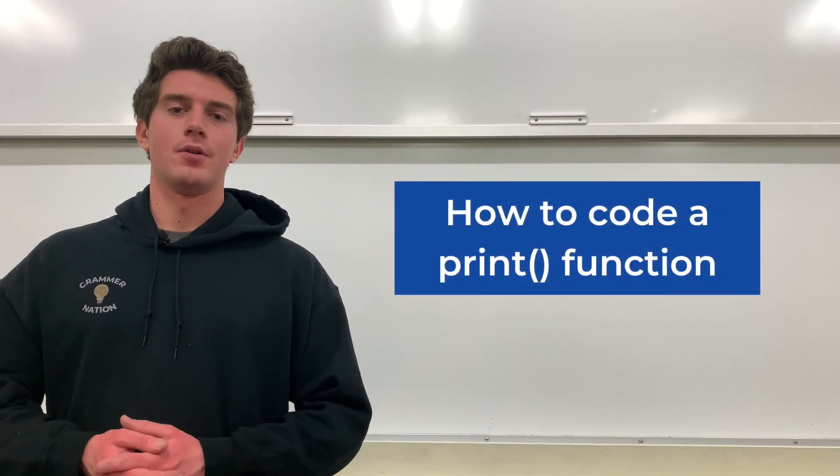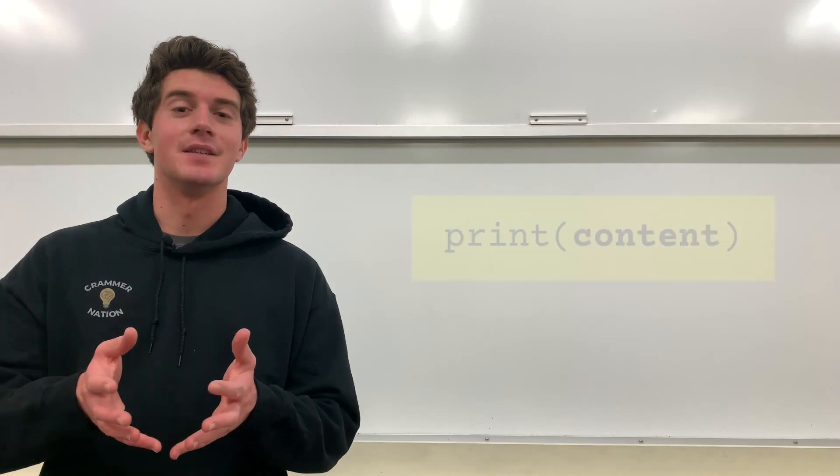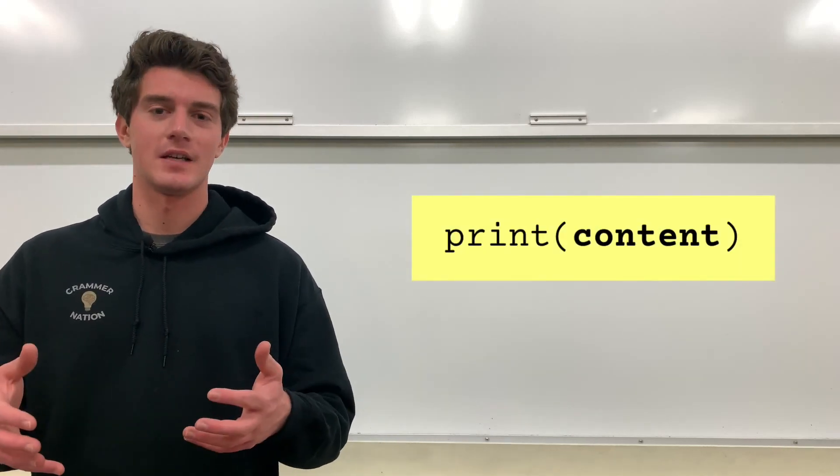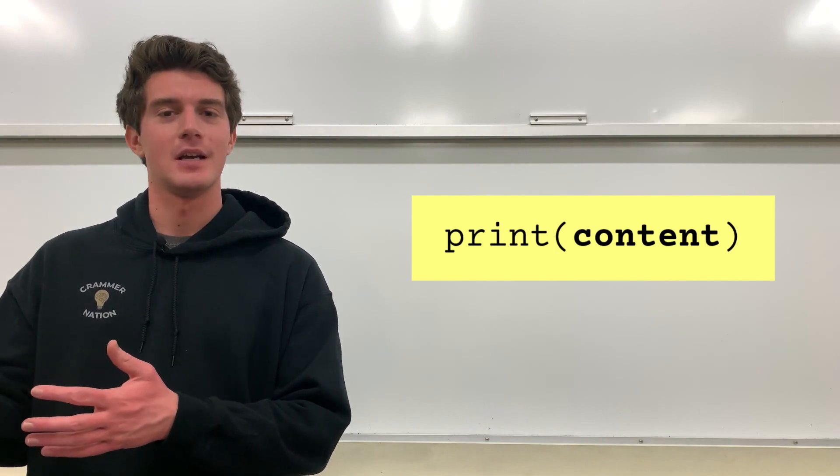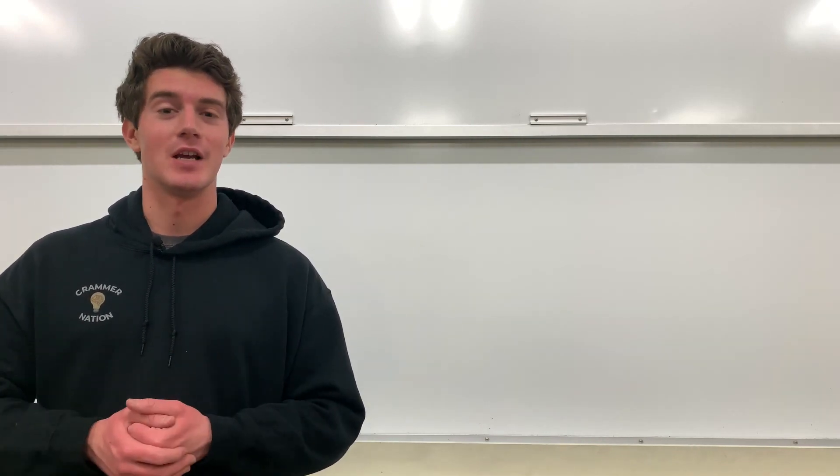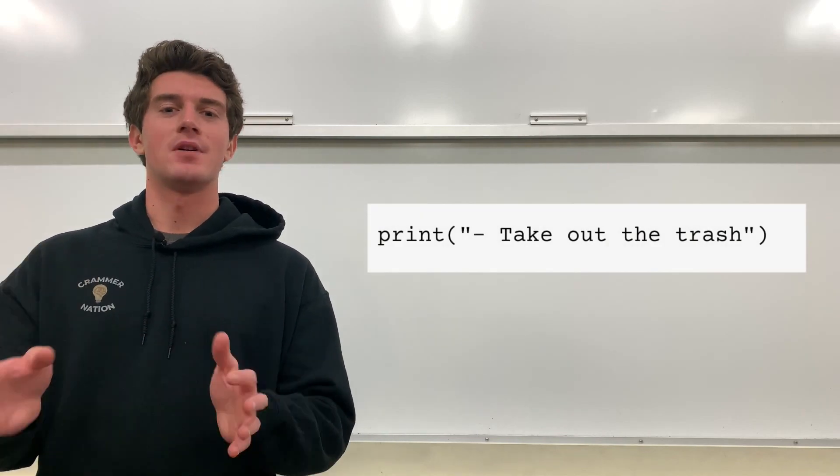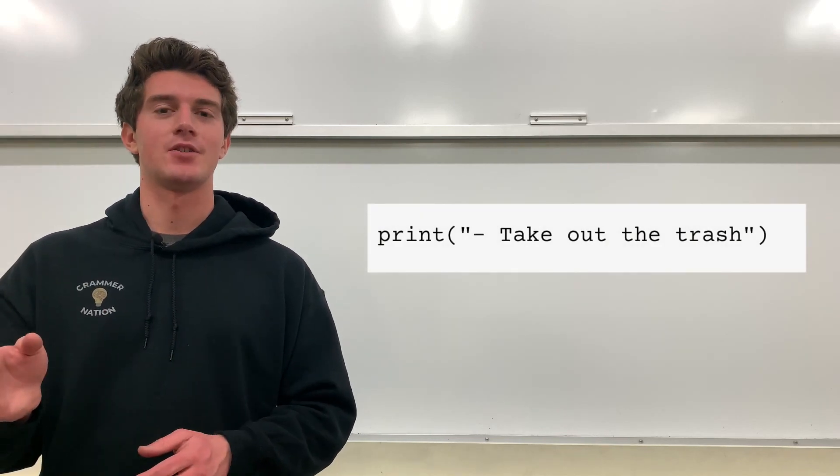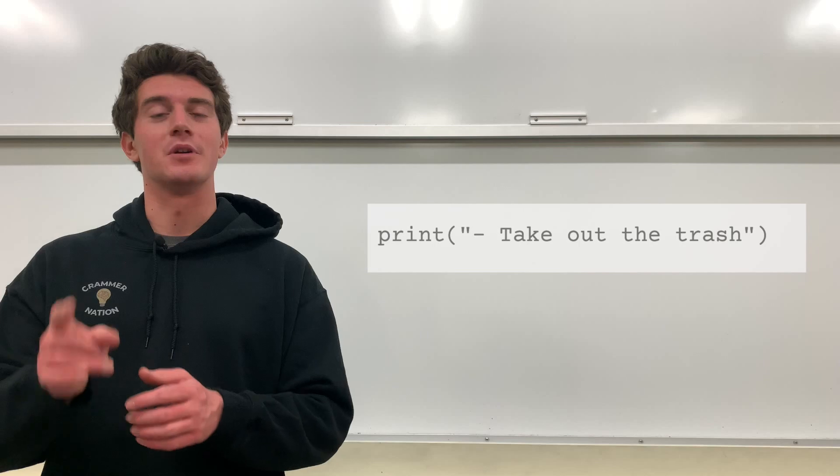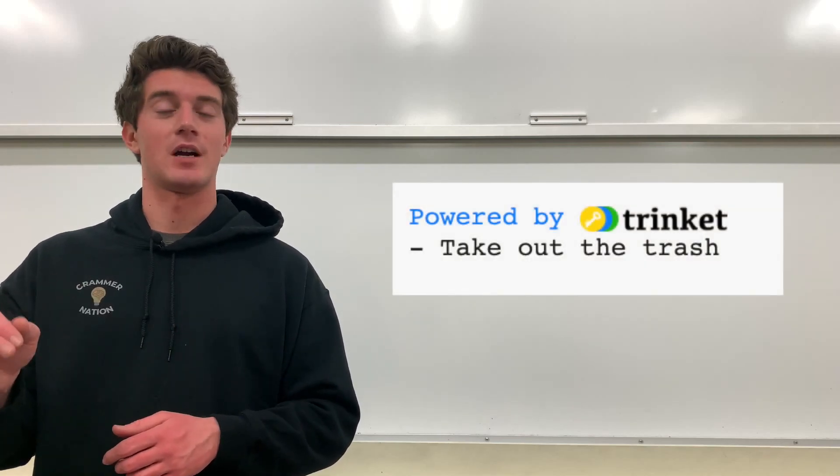So how do you code a print function? The template is this: we have print and then in parentheses whatever content we want to print in our output. So for our post-it note example, our first item was to take out the trash. So we would say print and then parentheses, we would say take out the trash. If we were to run this program, we would get one line of code saying take out the trash,